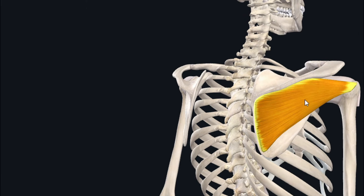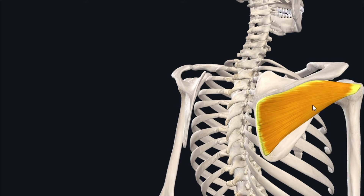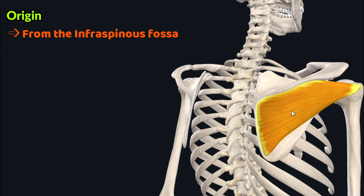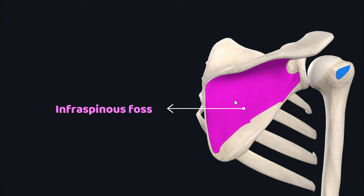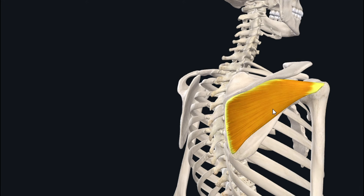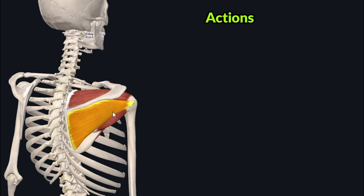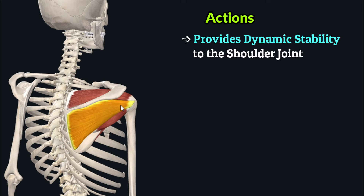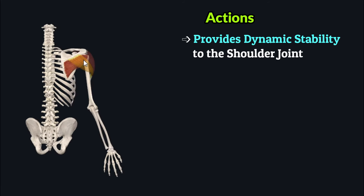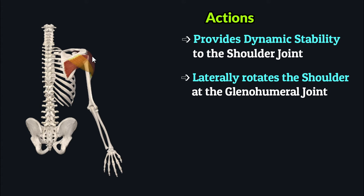The third muscle is the infraspinatus, which originates from the infraspinous fossa — the area on the lower posterior aspect of the scapula just below the spine. It travels superolaterally, crosses the lateral border of the scapula, and moves around the posterior aspect of the proximal humerus to insert on the middle facet of the greater tubercle. In isolation, it laterally rotates the shoulder at the glenohumeral joint; in combination with other rotator cuff muscles, it provides dynamic stability.